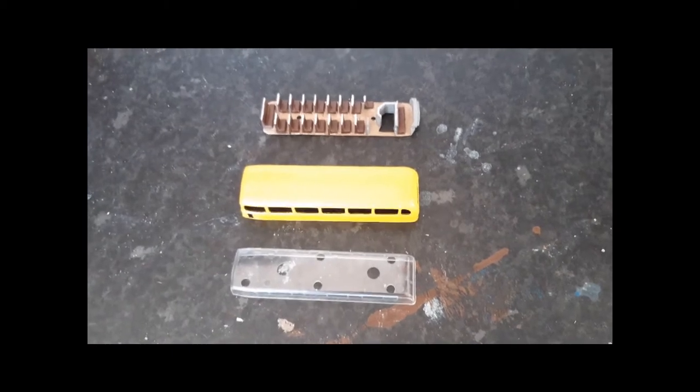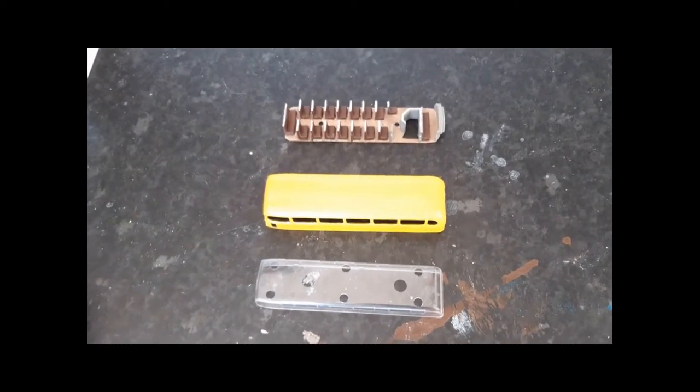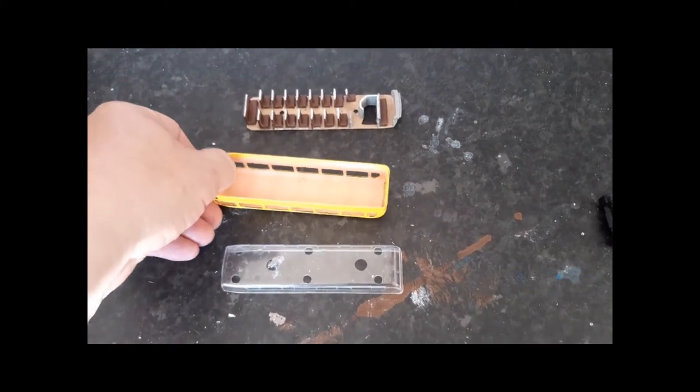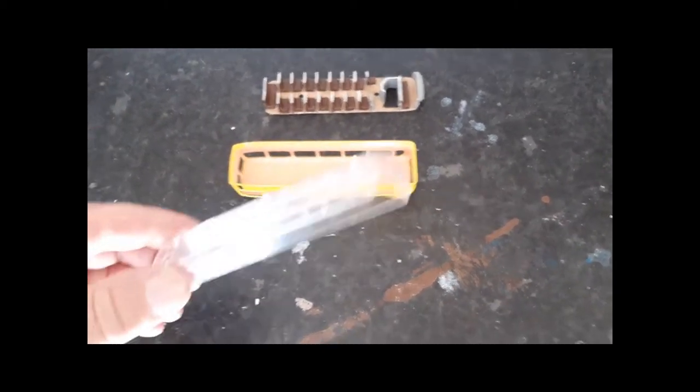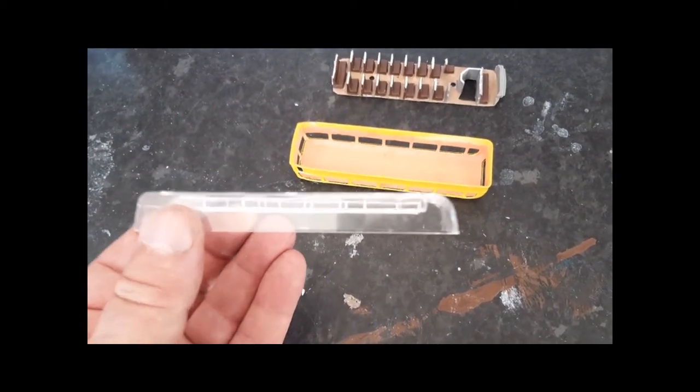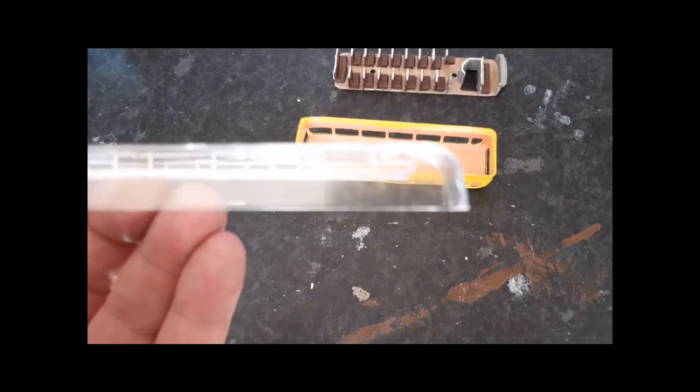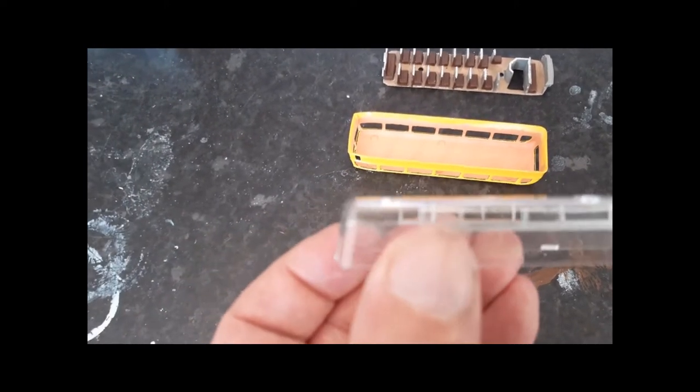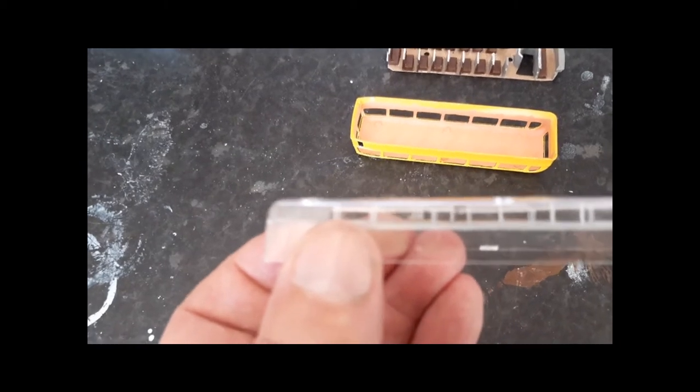So now we'll reassemble the top deck and it's a bit easier to deal with than the lower deck. Got the roof there, the glass. Make sure that the glass is the right way round or that you're attempting to fit it the right way round. You'll notice the rear is considerably more curved on the glass than the front of the upper deck. So make sure that matches the profile of the bodywork.